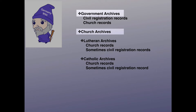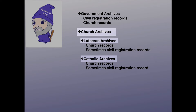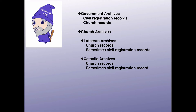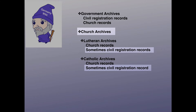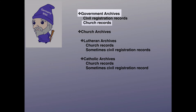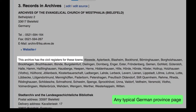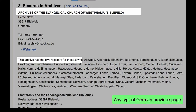There are both government archives and church archives. Church archives can be Lutheran or Catholic. And to make it even more interesting, sometimes civil registration records can be found in church archives, and church records can be found in state archives. Here is an example where the civil registers for some towns are found in the archives of the Lutheran Church.